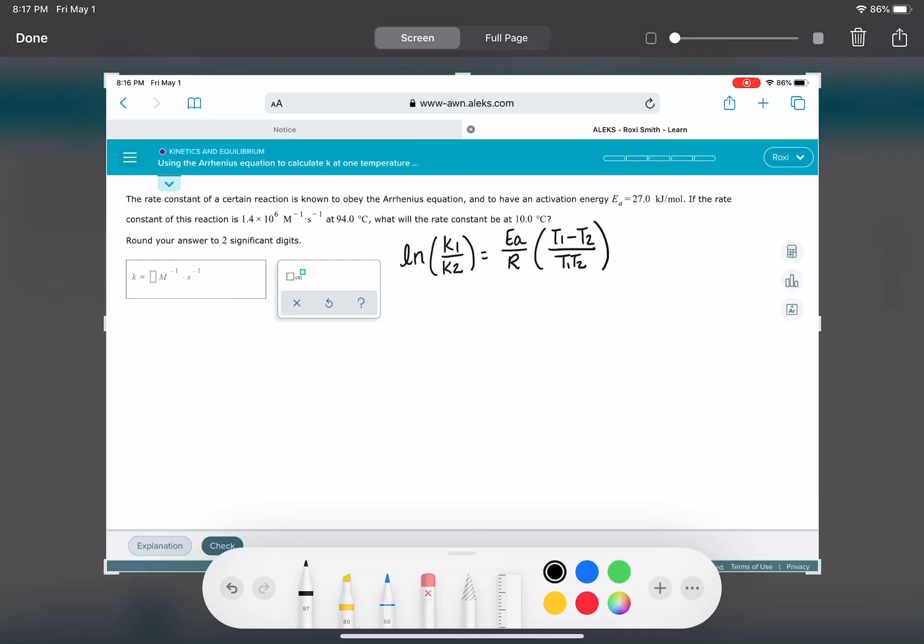So let's go through this problem and find our variables. We've got an E sub A and I don't know if you remember this from 162, but I like to right away just change that into the right unit, 27,000 joules per mole.